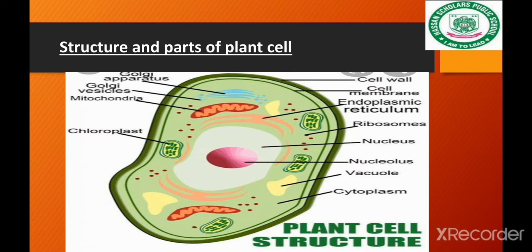In addition, there is cytoplasm, which contains different organelles such as ribosomes, proteins, and endoplasmic reticulum, which includes smooth and rough endoplasmic reticulum.